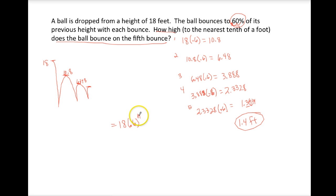For example, for the first bounce, I could put a 1 there, it would be 18 times .6, just 10.8. If I wanted to calculate the fifth bounce, I just put a 5 there.